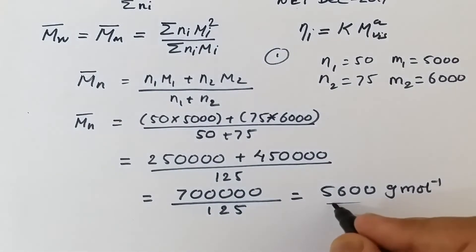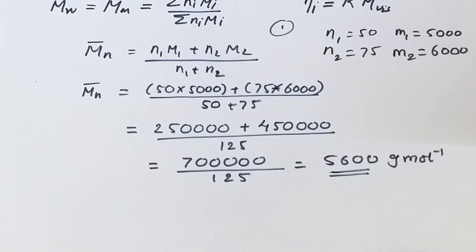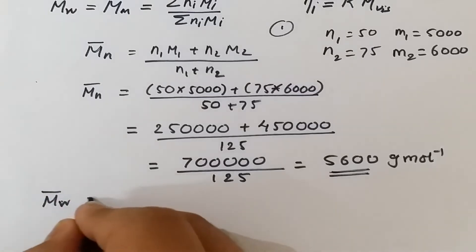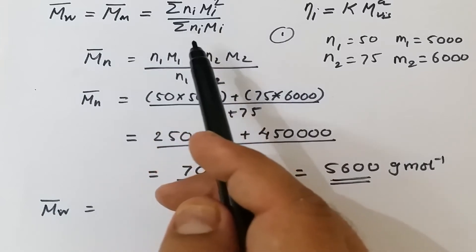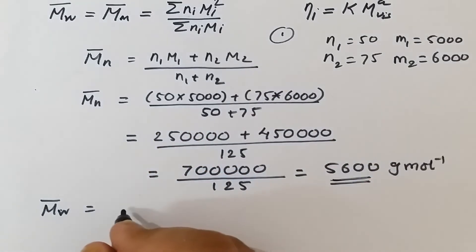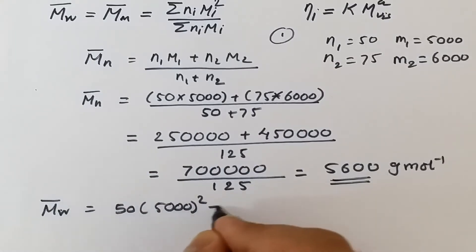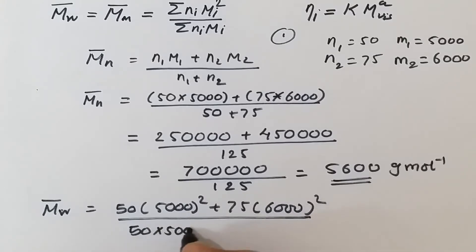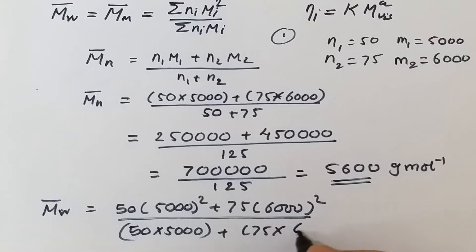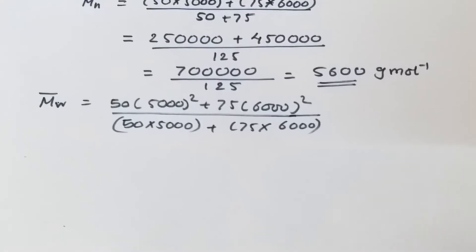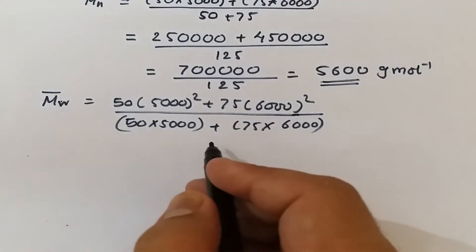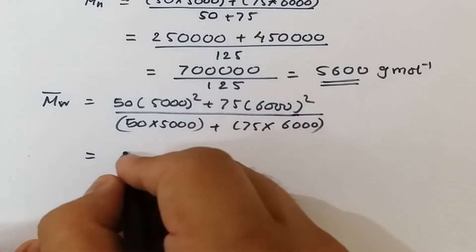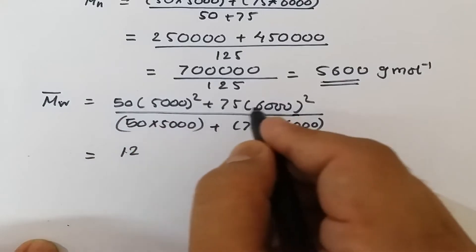Similarly, if we are asked to calculate the weight average or mass average molecular weight, we use summation of Ni·Mi² divided by summation of Ni·Mi. Substituting directly: 50 × 5000² + 75 × 6000², divided by 50 × 5000 + 75 × 6000. You will need a calculator for this, though it can be done manually with more time.